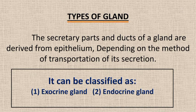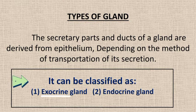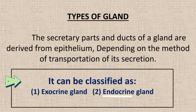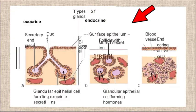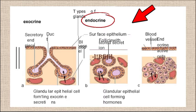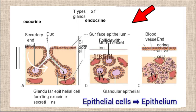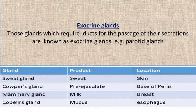Depending on method of transportation, glands have two main types: exocrine glands and endocrine glands. The secretory part and the ducts of glands are derived from epithelium. Exocrine glands have ducts, while endocrine glands are ductless. Their secretory parts and ducts which transport hormones are made up of epithelial cells.